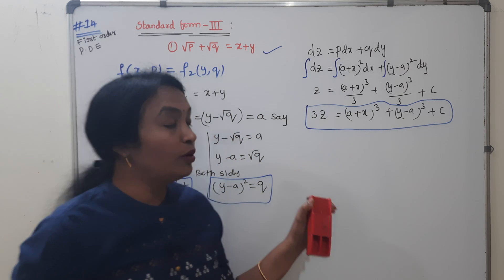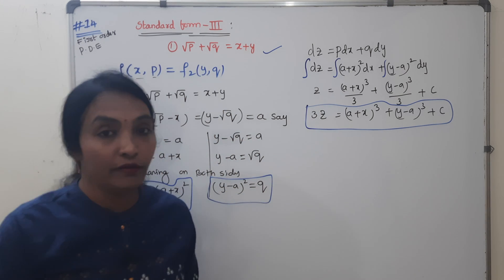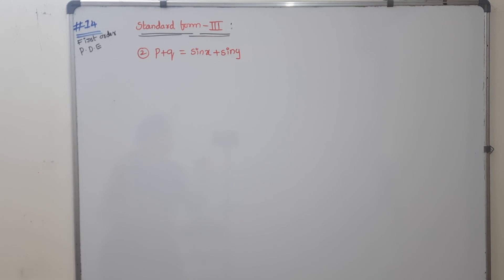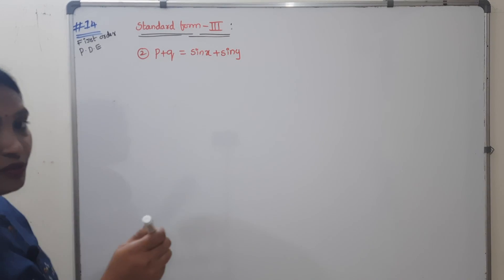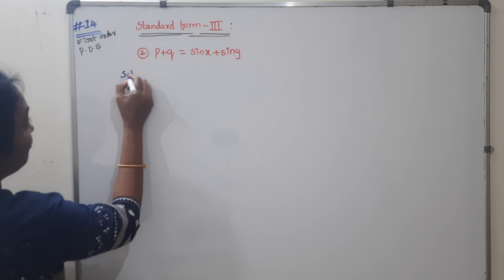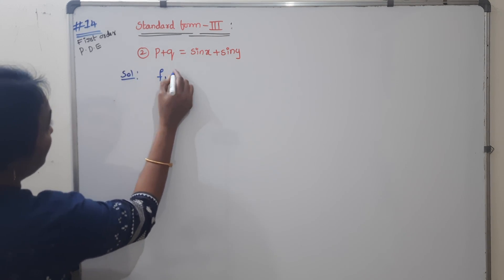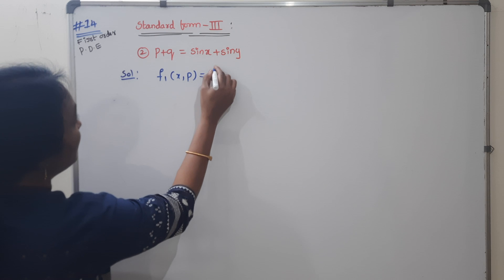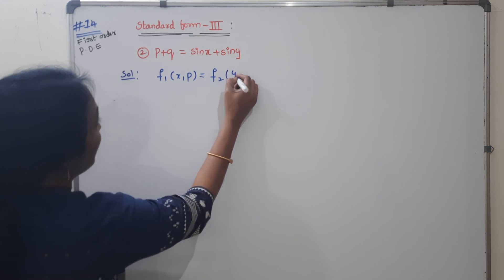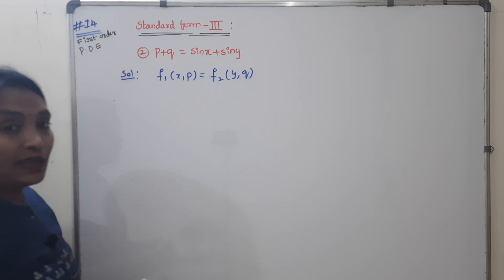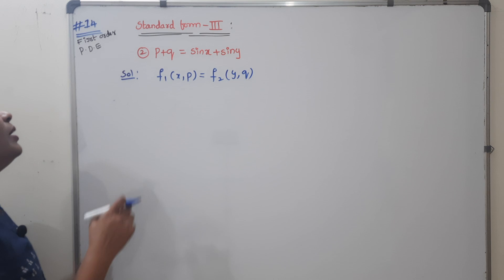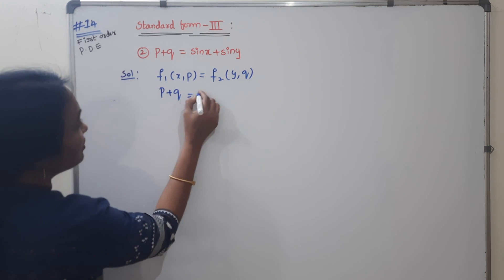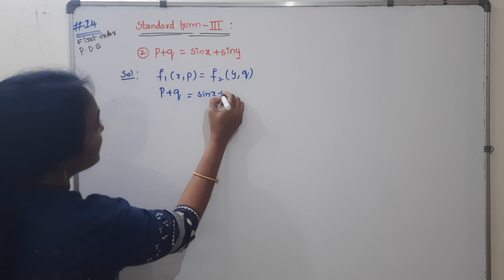Now I'll explain one more problem involving sin X and sin Y. This looks like F1(X, P) equals F2(Y, Q) — Standard Form 3 applies. The given equation is: P plus Q equals sin X plus sin Y.